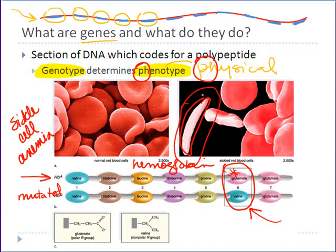This is an example where just the genotype you have can have a profound effect on your phenotype or physical appearance. A person with sickle cell anemia will have a whole slew of health issues that a person who does not have sickle cell anemia will not have to experience.